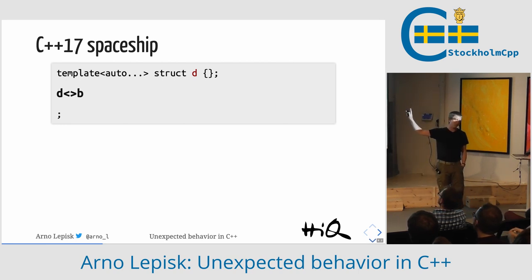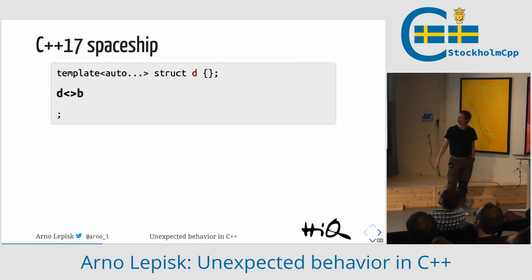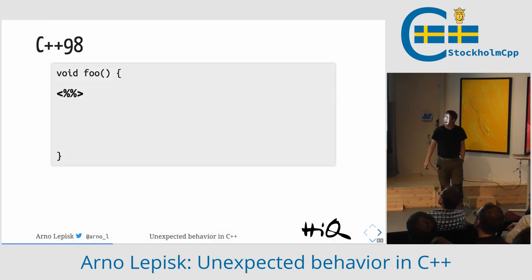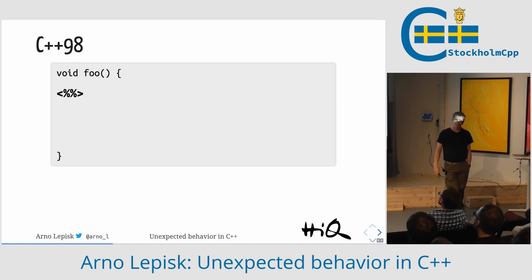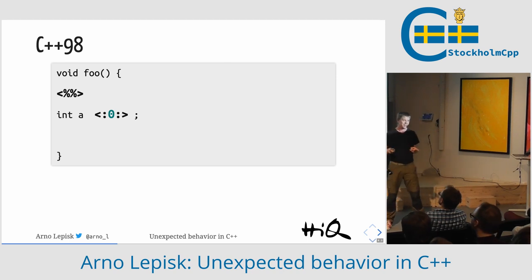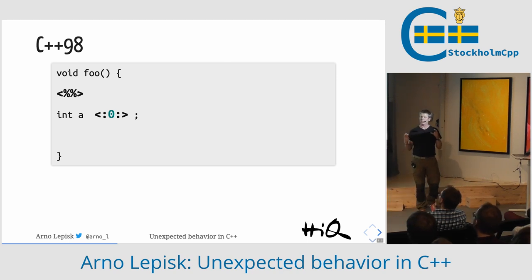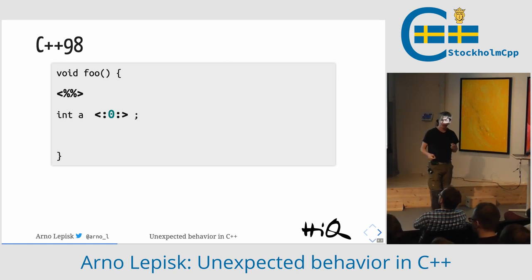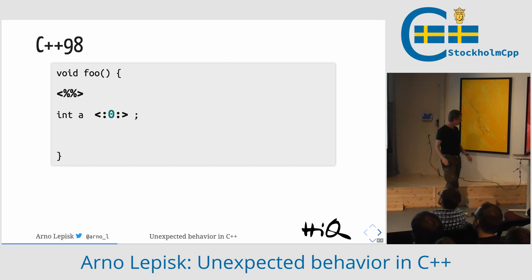With some modifications, you can use this in earlier C++ versions as well. In C++98, we can write this — or even that. That kind of looks like a TIE fighter from Star Wars, doesn't it? Like the special TIE fighter that Darth Vader used in the sixth film — or third, depending on which way you count.